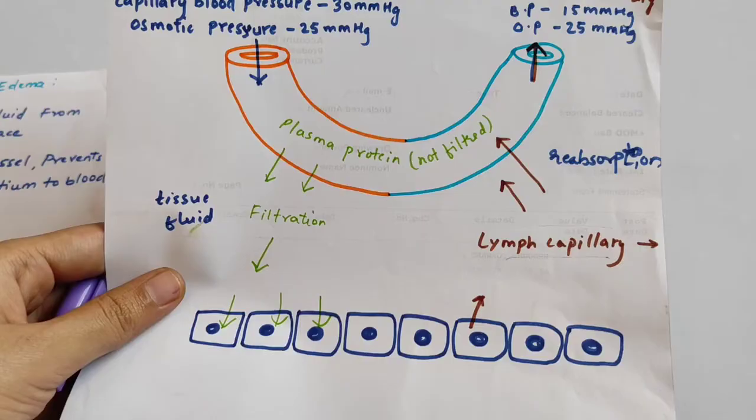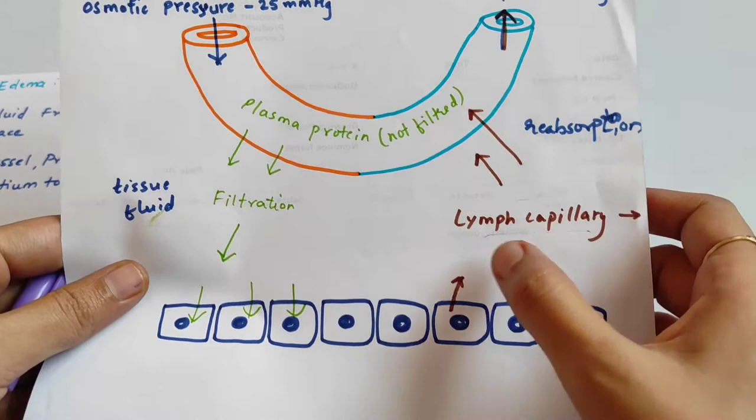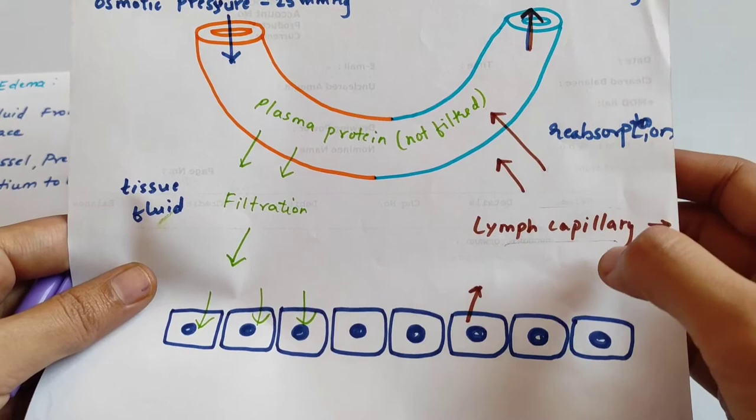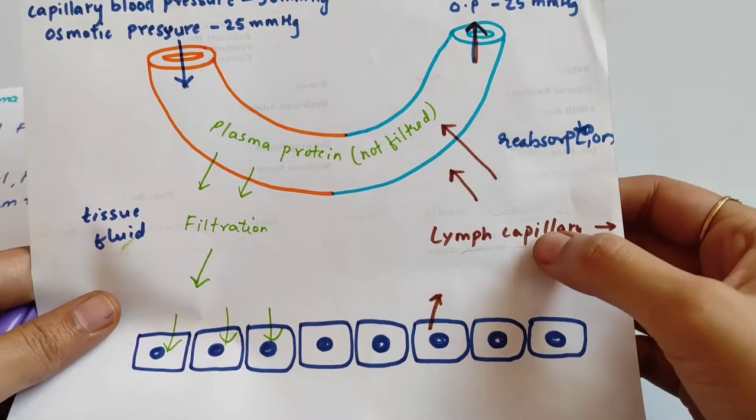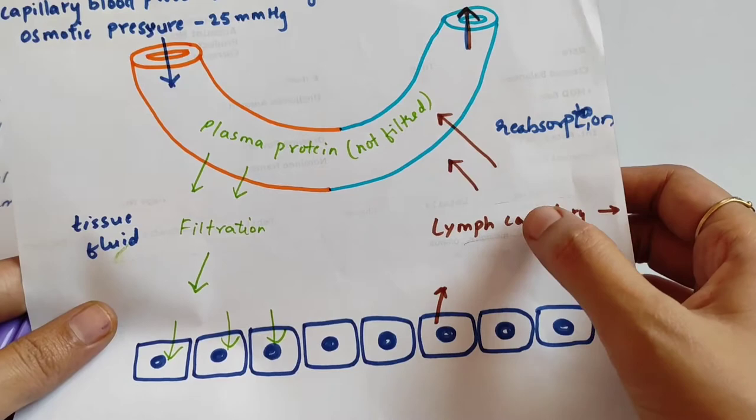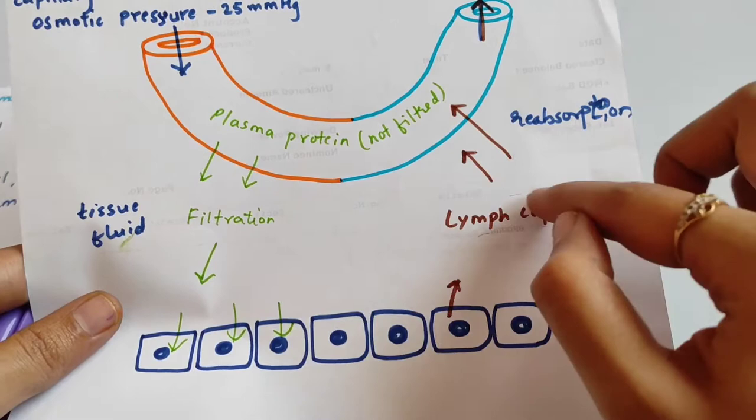Normally, the excessive tissue fluid here drains into the lymphatic channel. But if there is obstruction in the lymphatic vessel — such as in filariasis where the lymphatic vessel is obstructed — the fluid cannot flow back, and we will see extracellular edema.